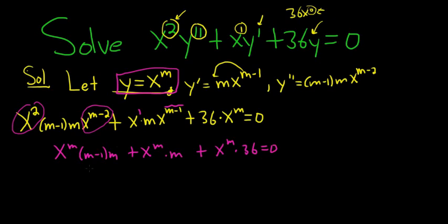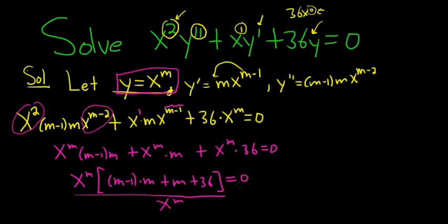Now we can factor out x to the m, so we have x to the m, bracket, and then we have m minus 1 times m plus m plus 36, and this is equal to 0. Now you could divide by x to the m, so divide by x to the m. These go away.